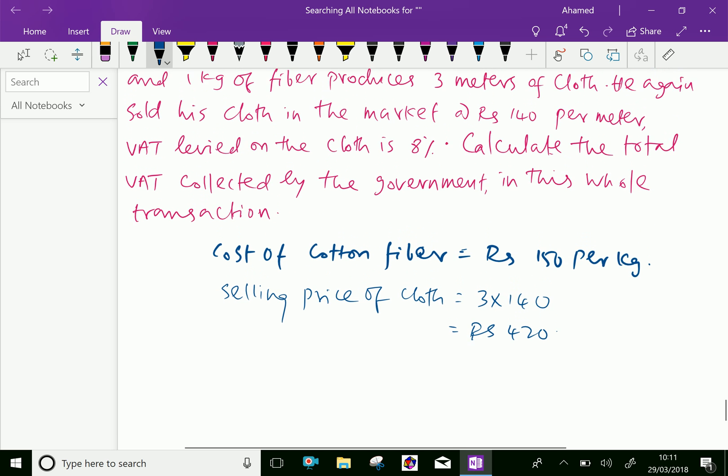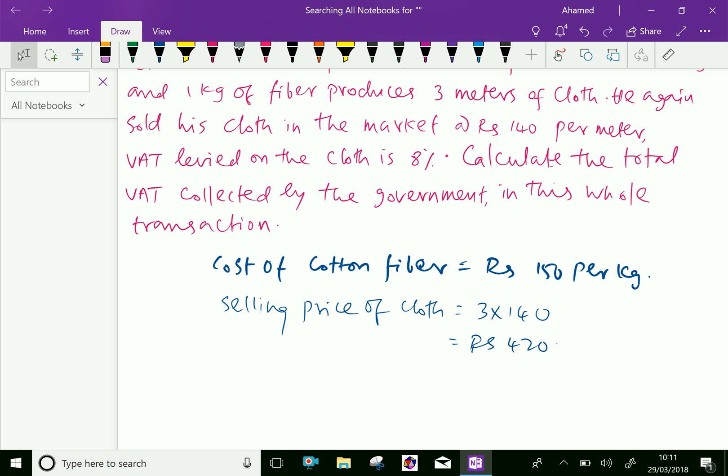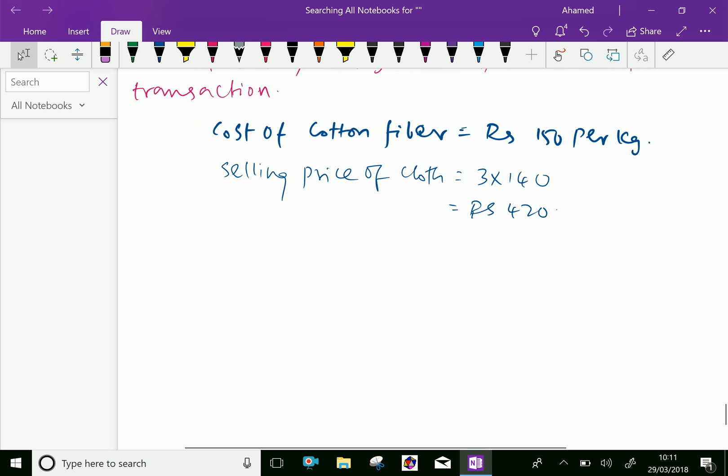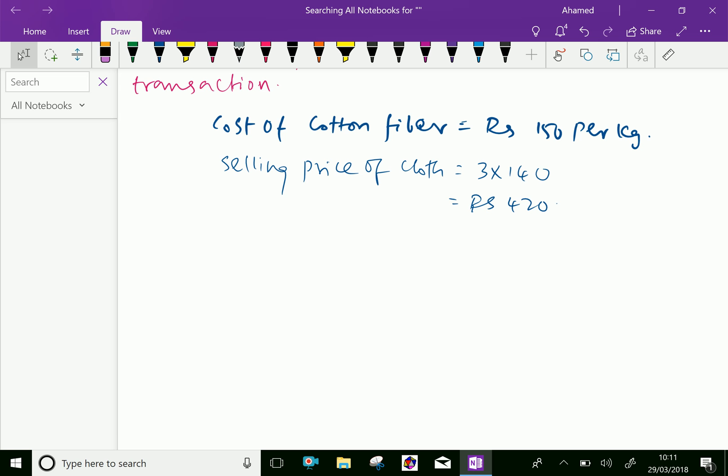Which means here, 1 kg of cotton fiber produces 3 meters of cloth. So, he sells Rs. 140 per meter. So, selling price of cloth is Rs. 420.